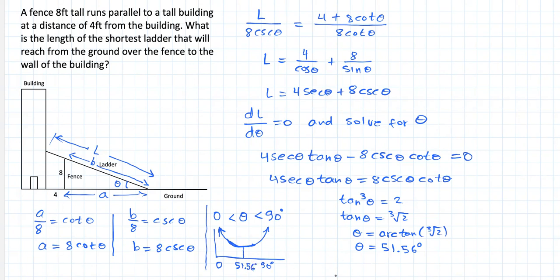So now that we know that this guy will minimize our function L, then we can say that L minimum should be equal to 4 over cosine of 51.56 degrees, plus 8 over sine of 51.56 degrees. And when you compute this, you should get 16.65 feet.